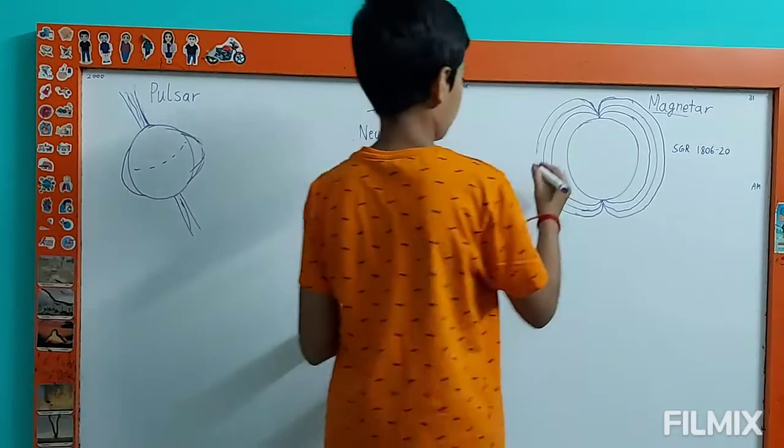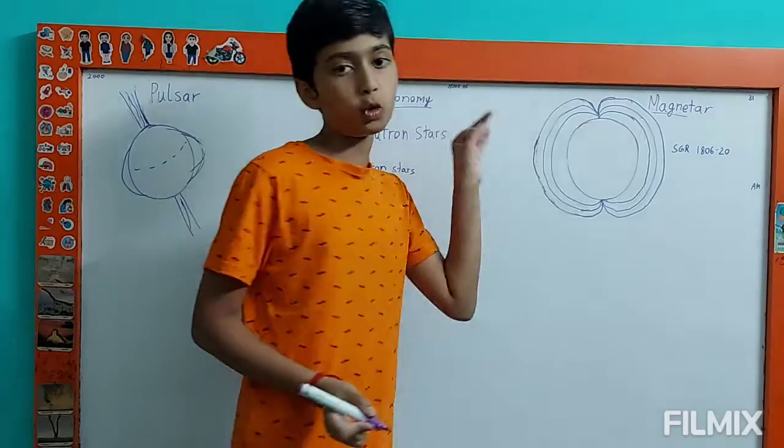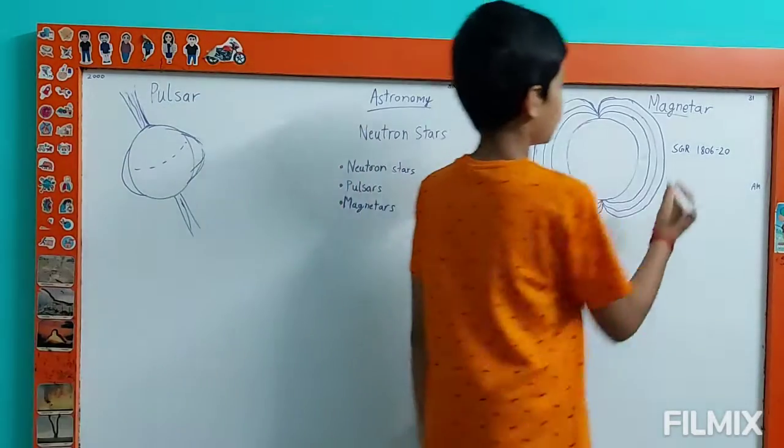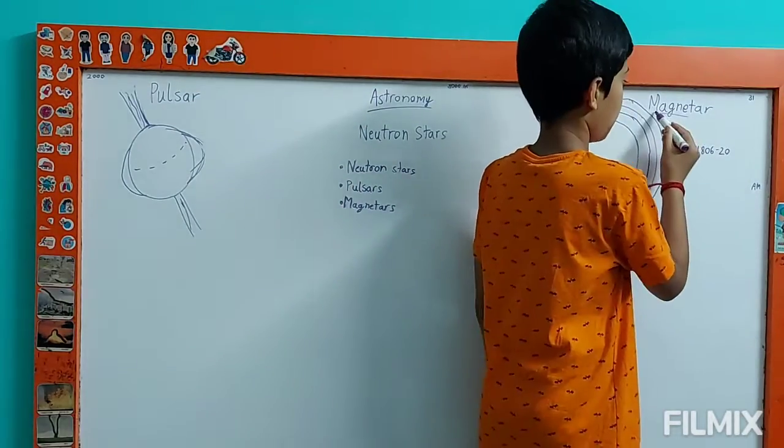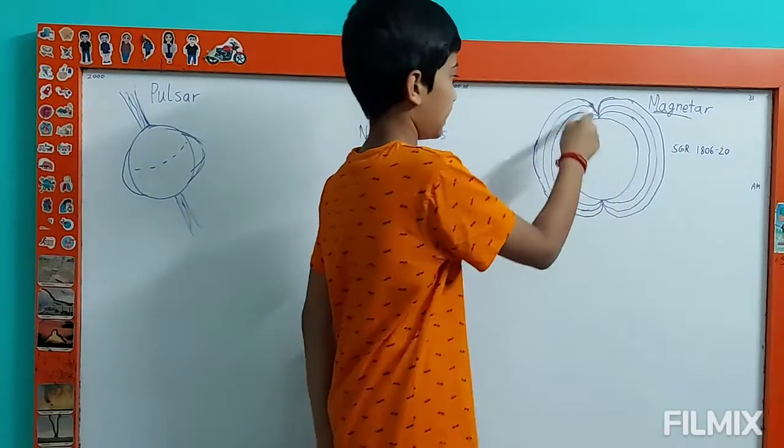So, the most powerful magnets in the universe are magnetars. You can't get more powerful than the magnetars. Also, that's why they are called magnetars. Magnet is in the name, because of their magnetic field.